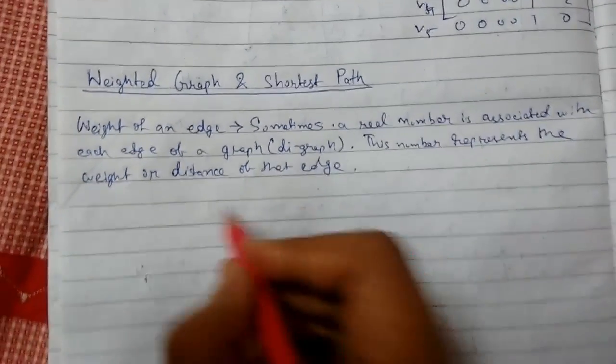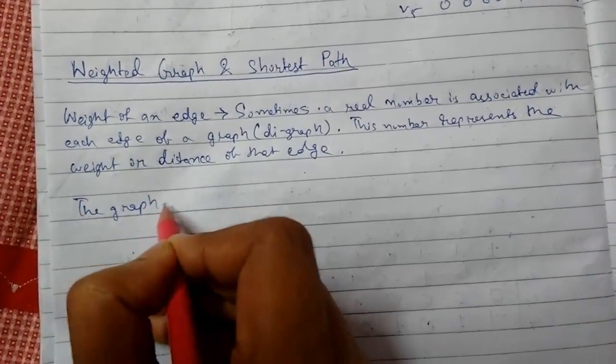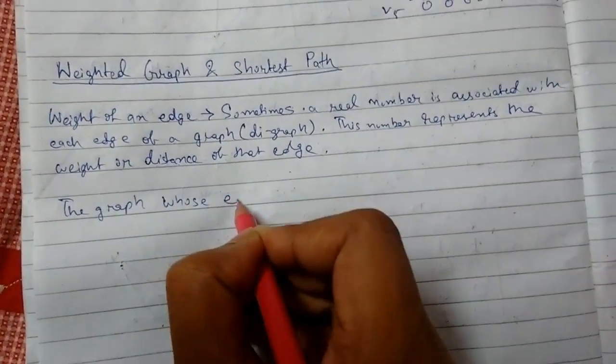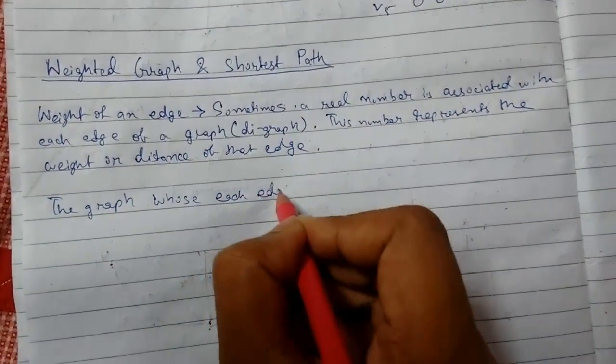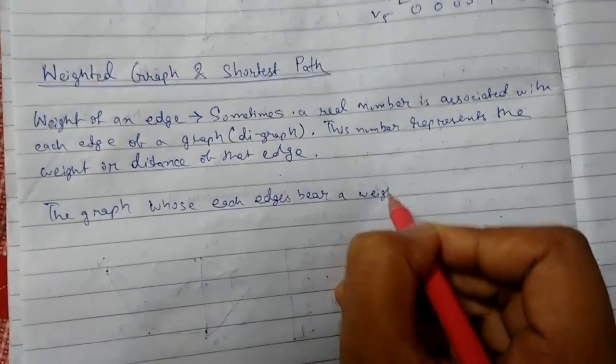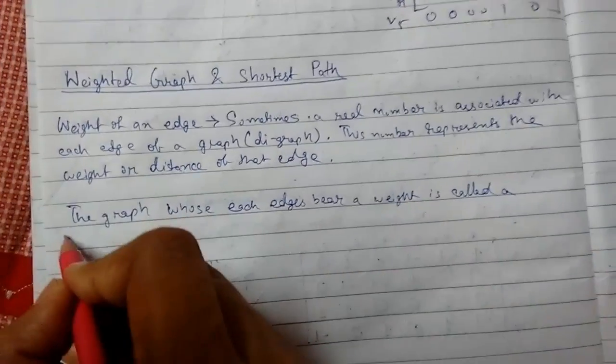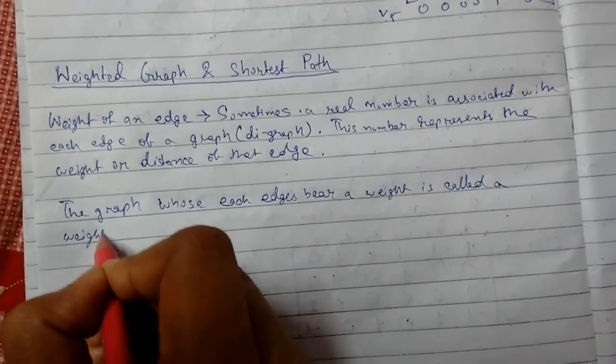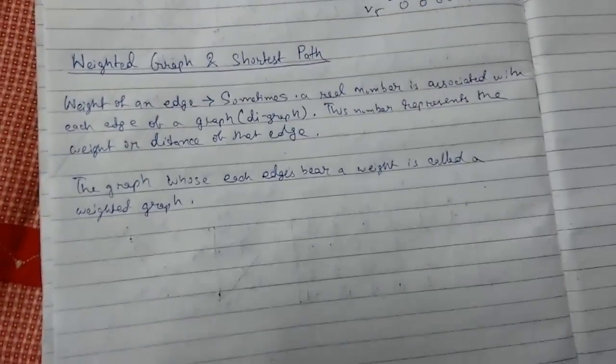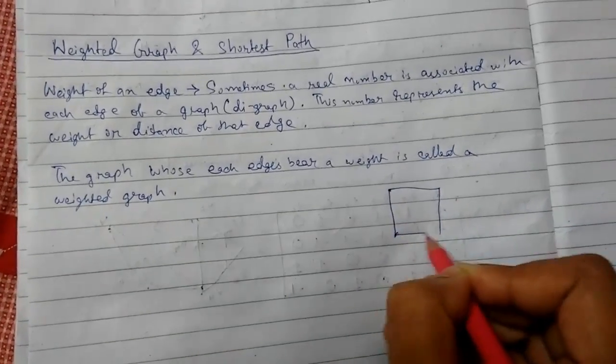The graph or directed graph whose each edge bears a weight is called a weighted graph. So let me show you what I am talking about. Suppose we have something like this.